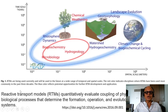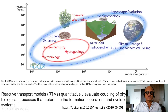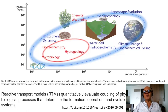Here we are looking at a nice schematic that shows the main processes. These are called reactive transport models, which quantitatively evaluate the coupling of physical, chemical and biological processes that determine the formation, operation and evolution of Earth's surface systems. So when you go around and look at the Earth's surface, you see vegetation, rocks, soil, deserts and so on.